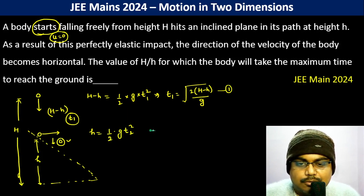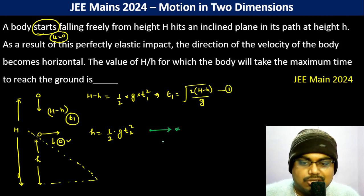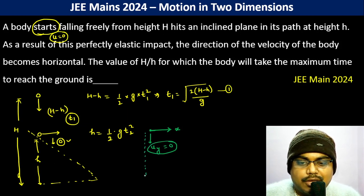Now when it's here, the velocity is in X direction, so Y direction velocity is zero. So U_y is actually 0 and now to cover h height.